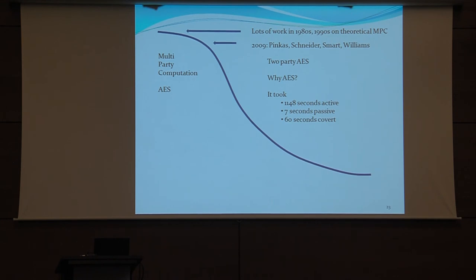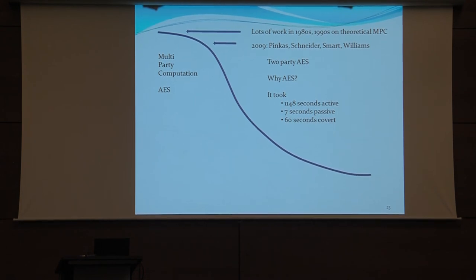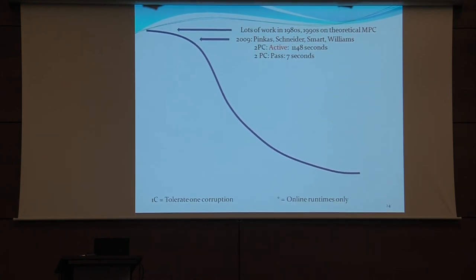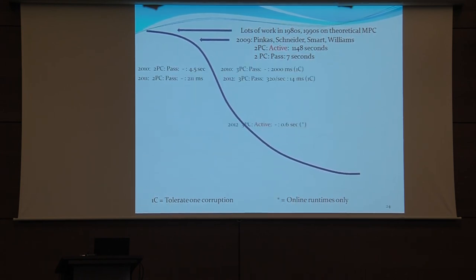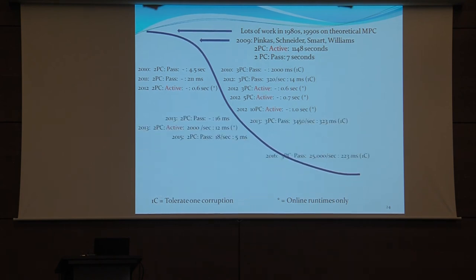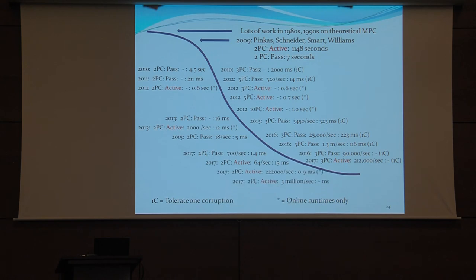AES was very complicated to produce because FairPlay couldn't compile that as a circuit — it just blew up. So I had to compile little bits of the circuit and stitch them together, correcting bugs along the way. This took about three or four weeks to write the circuit down. It turns out it's actually a bad example as a complex circuit because there's lots of mathematical structure in AES — the S-box is an inversion using the Nyberg trick of x maps to 1/x to get good differential properties. But it took 1,148 seconds to implement in an actively secure manner. That's where we were in 2009.